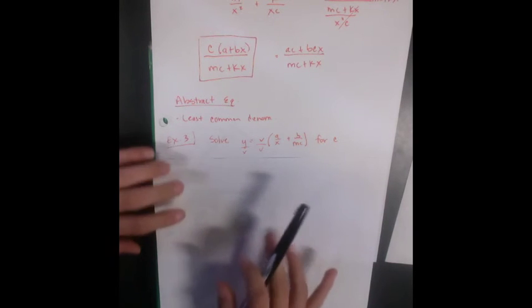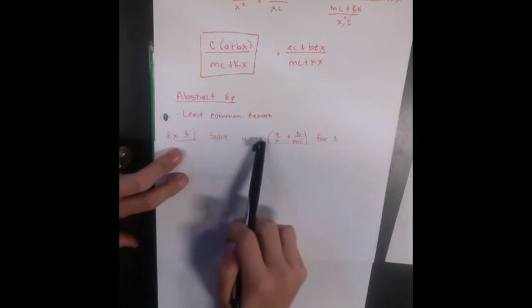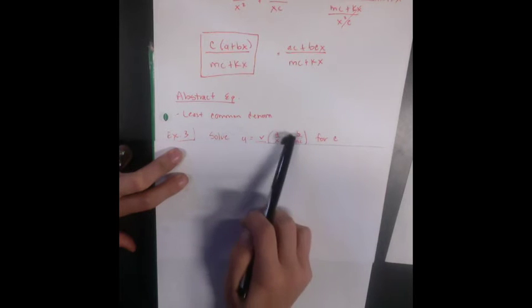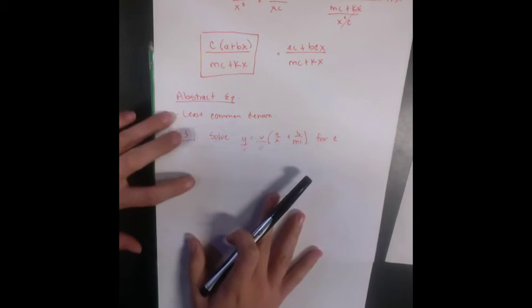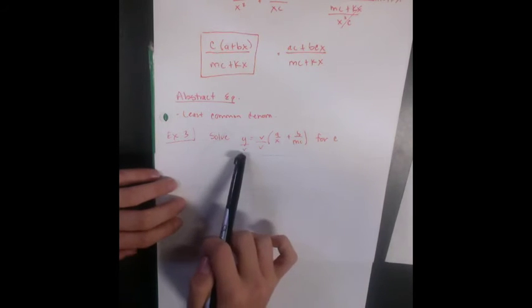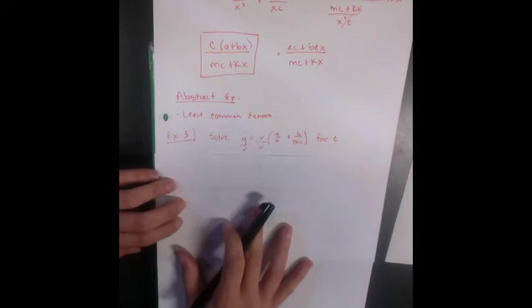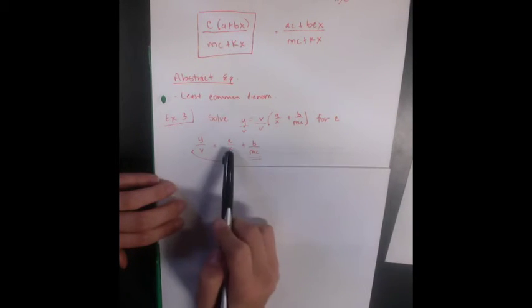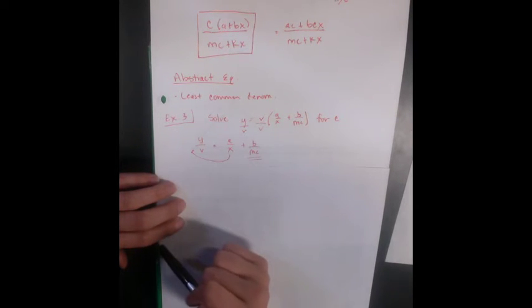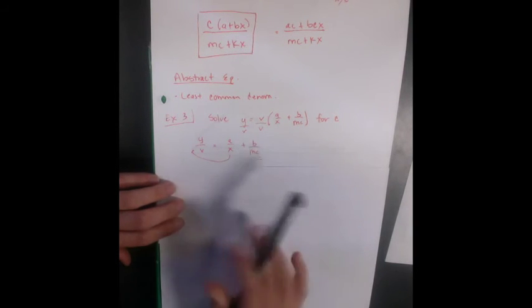We're going to solve y equals v times a over x plus b over mc. We're going to solve that for c. So the first thing I'm going to do is divide both sides by v. Now after I divide by v I'm left with a over x plus b over mc. I'm going to bring the a over x over to this side to isolate my c term.